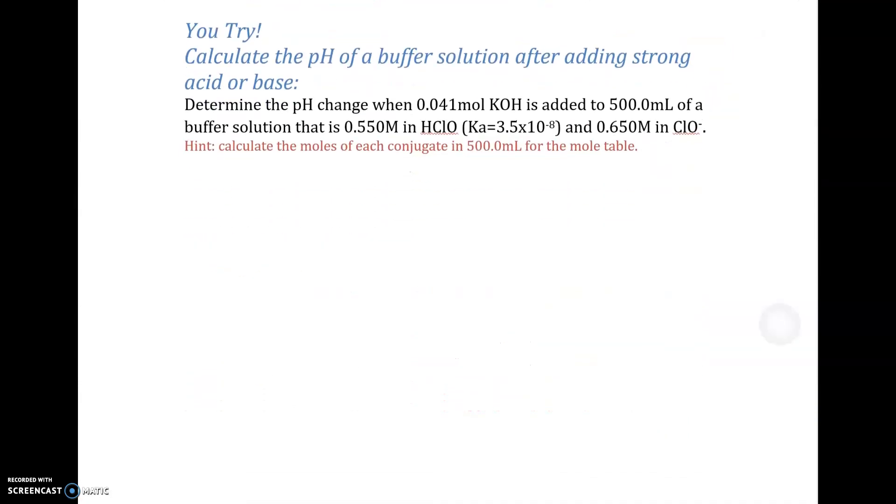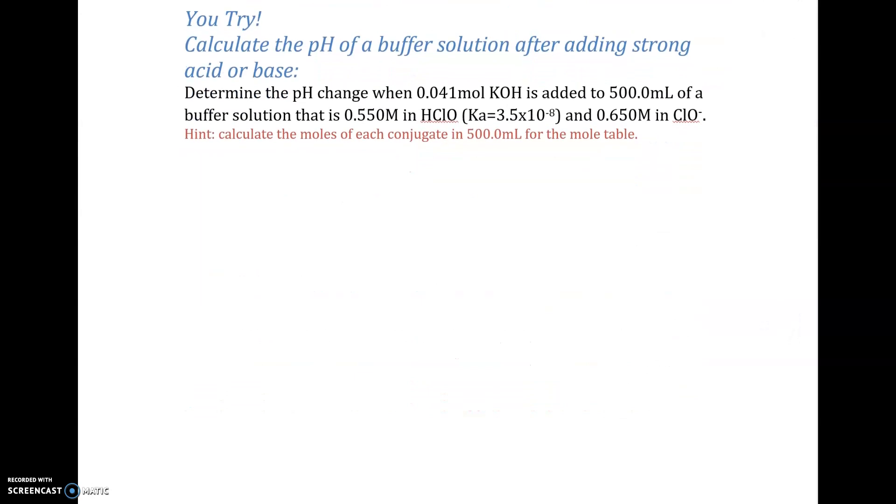Here's one for you to try. So pause the video and give this a try. One thing that's a little bit different from the last problem is this is in 500 milliliters. So when you get to your mole table, you're going to have to convert that to moles from molarity for both your acid and base. But your initial Henderson-Hasselbalch, your initial pH, you can just use those molarities as given. I have a buffer system here. I like to write the acid hydrolysis just to ground me and get me started. Probably isn't totally necessary, but I like to do this. So my H from my acid goes to H2O. I have ClO- plus hydronium ion.